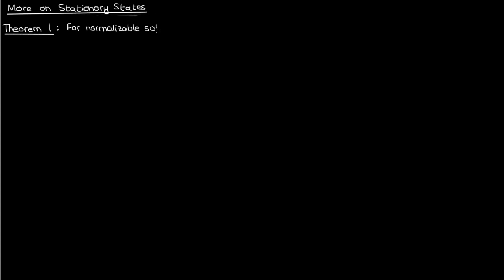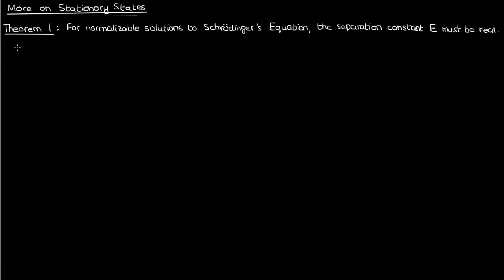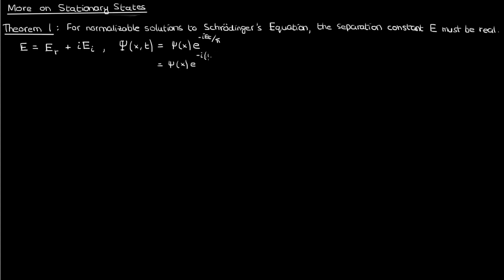Let's start with the first theorem, which states that for normalizable solutions to Schrödinger's equation, the separation constant E must be real. To prove this theorem, we'll suppose that the constant E is a complex number given by E_r, which is the real part, plus i times E_i, which is the imaginary part. Let's now go back to the equation for the wave function ψ.